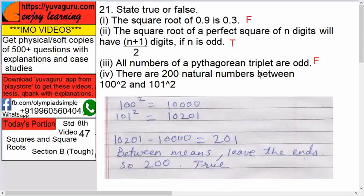100² is 10,000 and 101² is 10,201. Now we have to find the numbers between them, so we leave both 10,000 and 10,201.